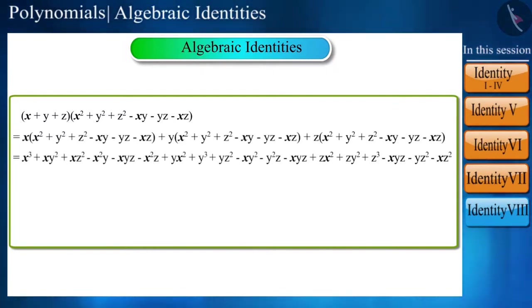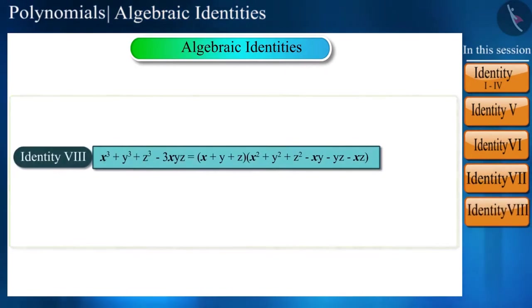So, after this step, some terms cancel each other, leaving only x cube, y cube, z cube, and minus 3xyz. And this is our identity 8.